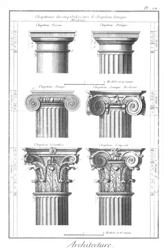Porte-cochère: a porch or portico-like structure at a main or secondary entrance to a building through which a horse and carriage can pass in order for the occupants to alight under cover, protected from the weather.